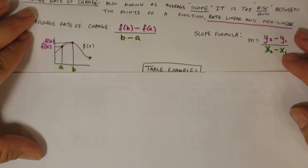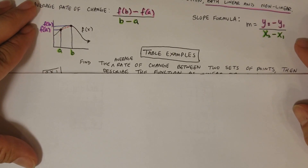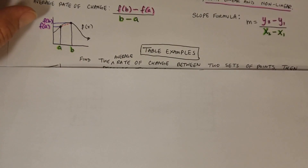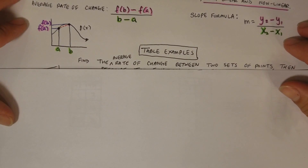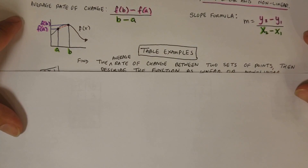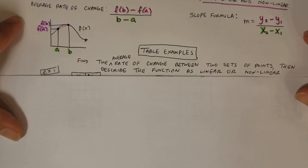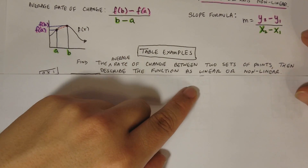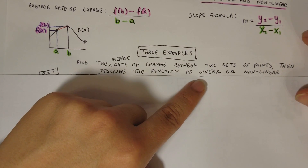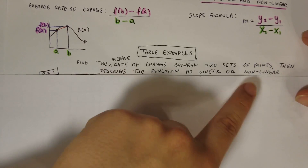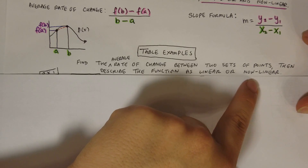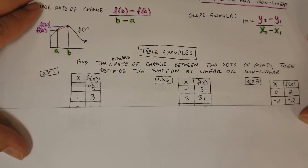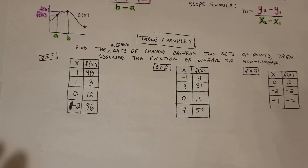Let's do some table examples, and then some graphical examples. We're going to find the average rate of change between two sets of points, then describe the function as linear or nonlinear. Linear functions always have to have the same slope — if it's a straight line, it has the same slope everywhere. Nonlinear functions do not have the same slope everywhere because of curves. For a straight line, the slope should be the same no matter where you find it.